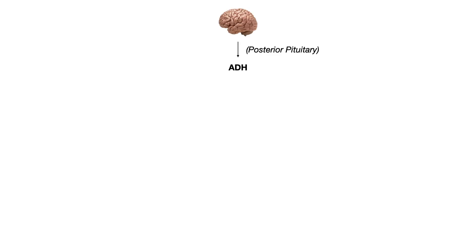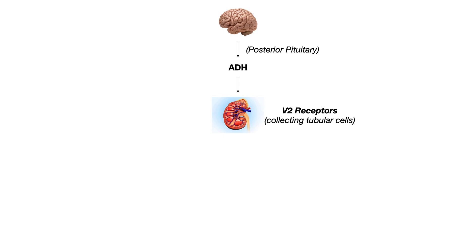Let's get started by talking about SIADH. I believe the best place to begin is going over the normal physiology of how ADH works. ADH is produced in the brain — it's produced in the hypothalamus and then stored and released from the posterior pituitary. Under normal circumstances, ADH will go to the collecting tubular cells and act on V2 receptors, causing water reabsorption through aquaporin-2 channels.